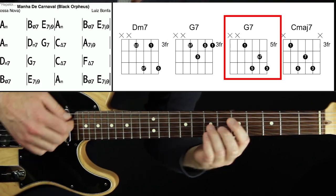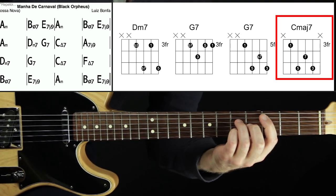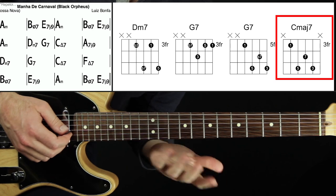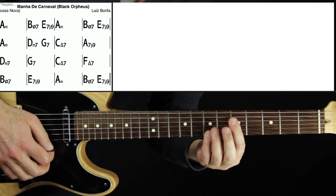So from the beginning. Okay second line. D minor seven. G7.